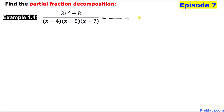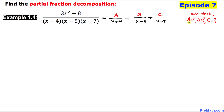Each fraction is separated by a plus sign. The first denominator is going to be x plus 4, the second one is x minus 5, and the third one is x minus 7. For the numerators, I'm going to put constant A for the first fraction, constant B for the second, and C for the third. Our task is to find the values of A, B, and C.